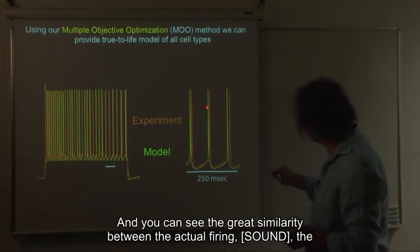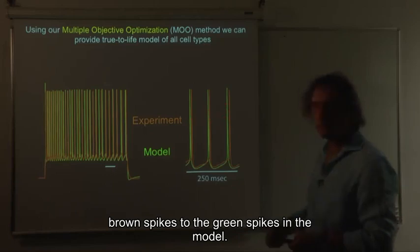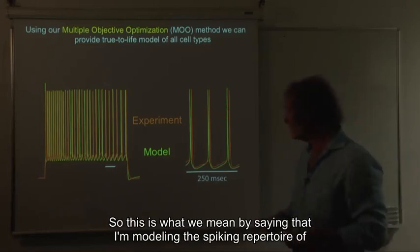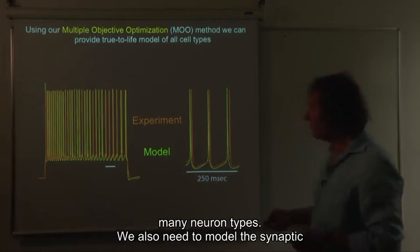And you can see the great similarity between the actual firing, tack, tack, tack, the brown spikes, to the green spikes in the model. So this is what we mean by saying that I'm modeling the spiking repertoire of many neuron types.